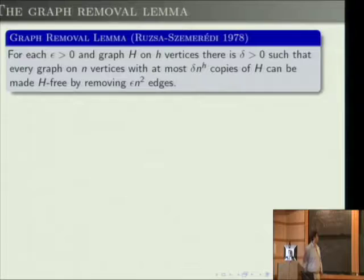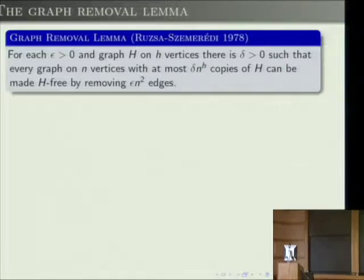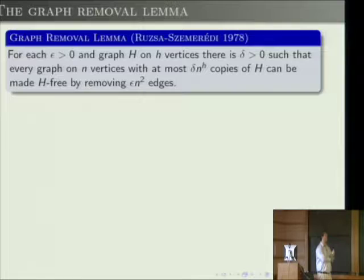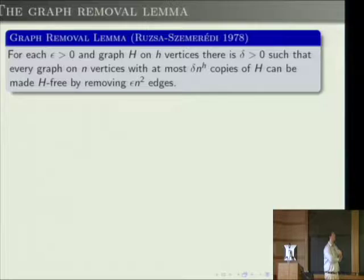One of the most important applications of the regularity lemma is the graph removal lemma. It says: for each epsilon > 0 and graph H on h vertices, there's some delta such that any graph with fewer than delta·n^h copies of H can be made H-free by removing at most epsilon·n² edges. So if you have very few copies of H, you can delete all copies by removing a small proportion of edges.